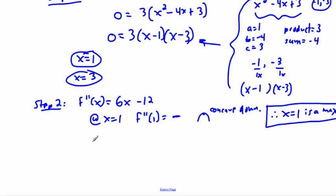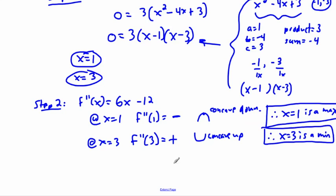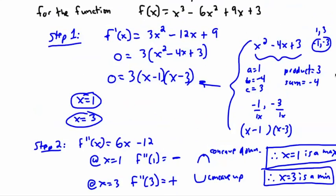Now checking at x = 3: f double-prime of 3 = 6(3) − 12 = 18 − 12, which is positive. That means it's concave up — so x = 3 is a minimum. These are local max and local min values.